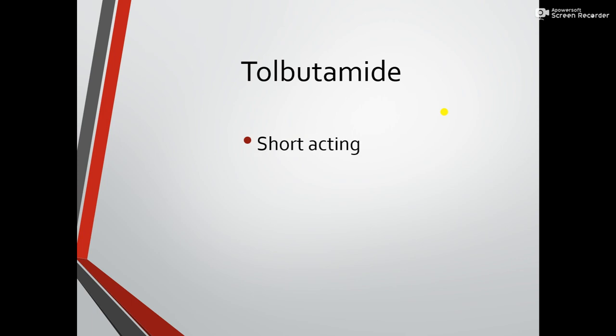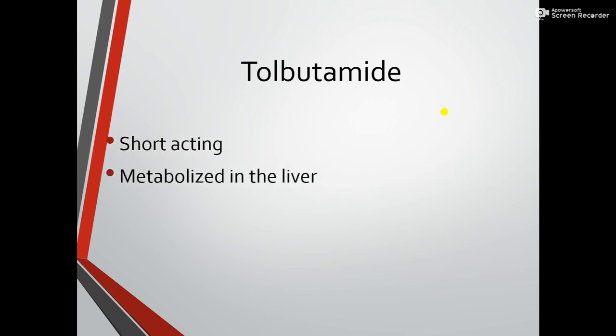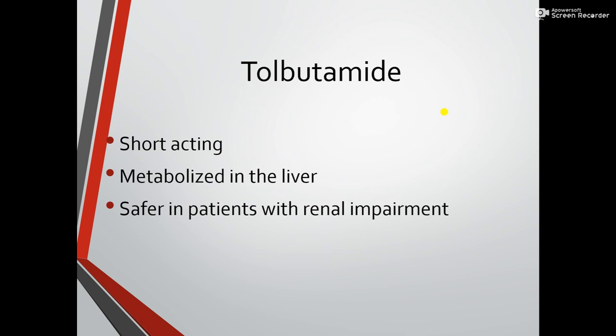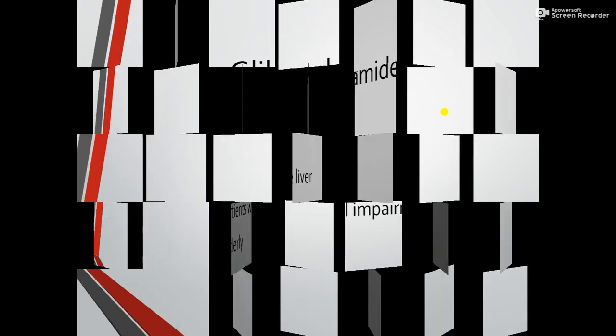Tolbutamide is a short-acting anti-diabetic drug. It is metabolized in the liver, which is the major organ responsible for drug metabolism. Tolbutamide is safer in patients with renal impairment and is also safe in elderly patients — those who are above 60, 70, or 80 years — so tolbutamide can be recommended for them.